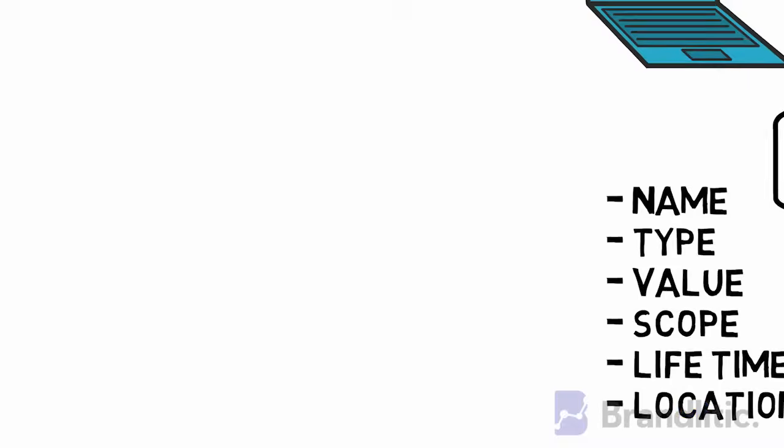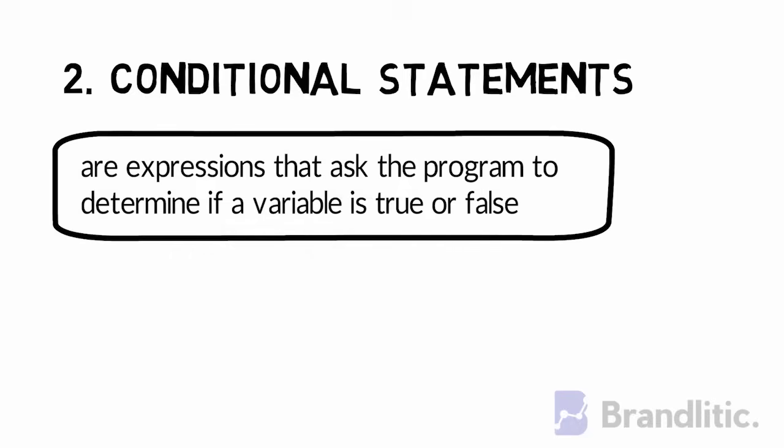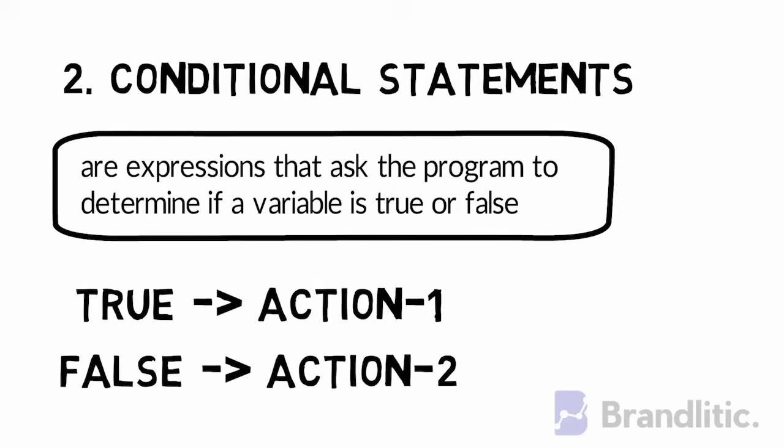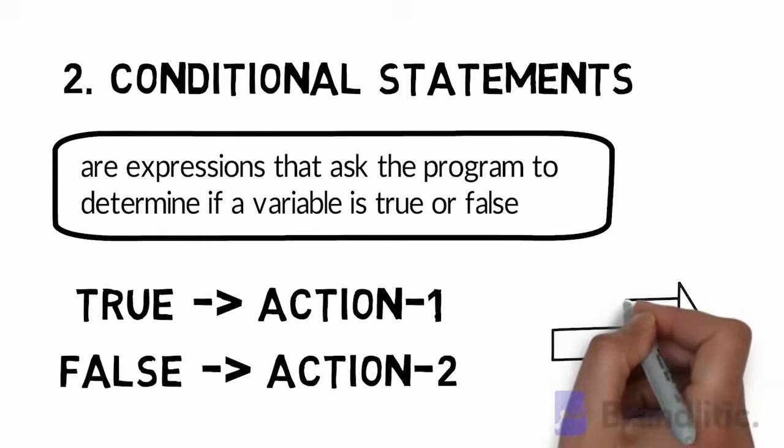2. Conditional Statements. By definition, conditional statements are expressions that ask the program to determine if a variable is true or false. You may also call it Boolean values. Typically, if a statement is true, the program should perform one action. For example, action 1. If the statement is false, the program should perform a different action, let's say action 2. These actions are called conditions.